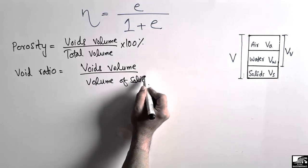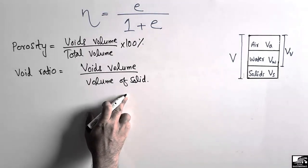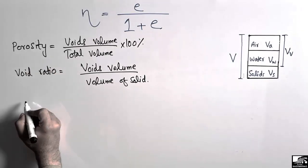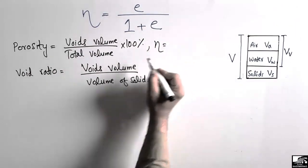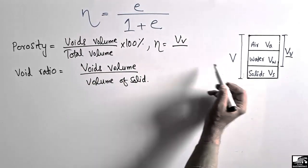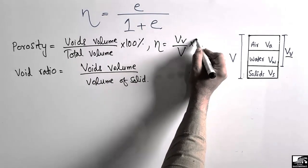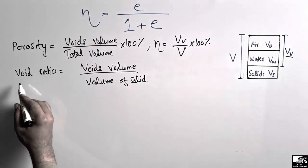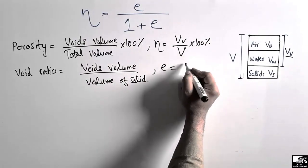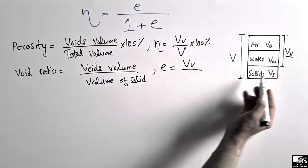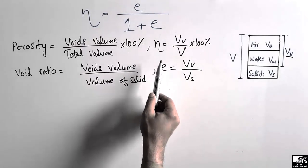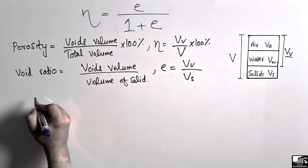So now, representing by letters: porosity n is equal to the void volume VV divided by the total volume V. The void ratio e is equal to the void volume VV divided by the volume of solids VS. These are the main definitions of the two technical terms — porosity and void ratio.